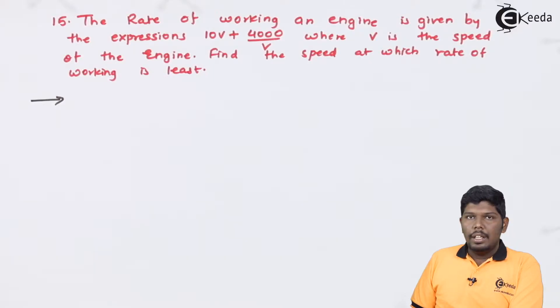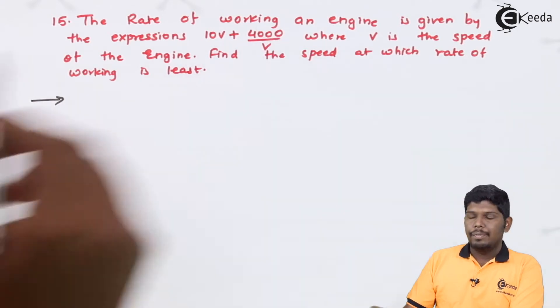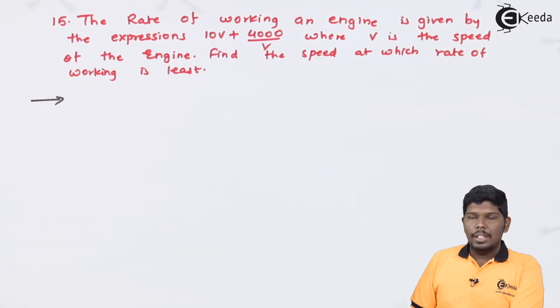The rate of working an engine is given by the expression 10V plus 4000 upon V, where V is the speed of the engine. Find the speed at which the rate of working is least.